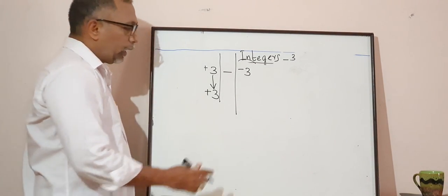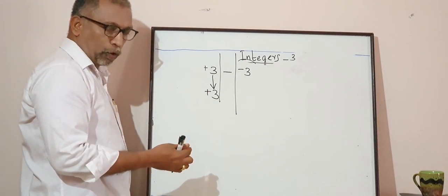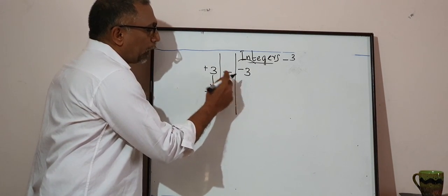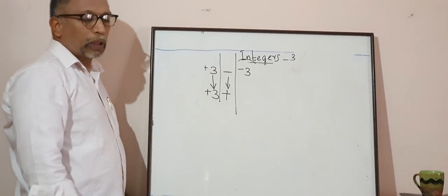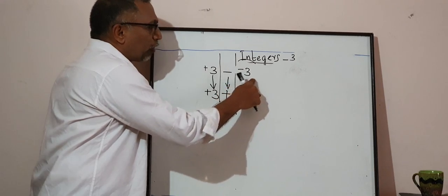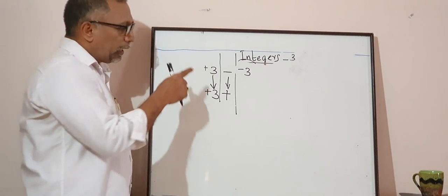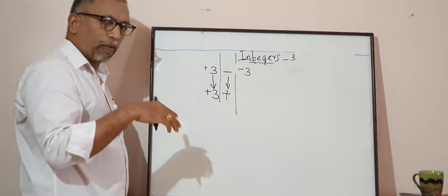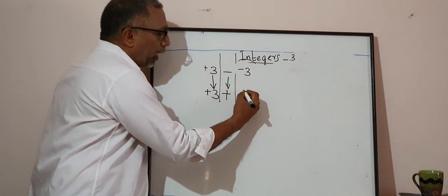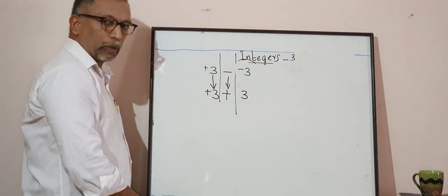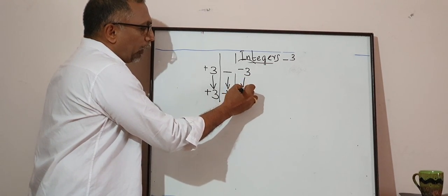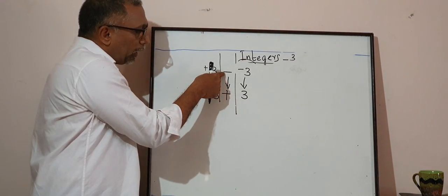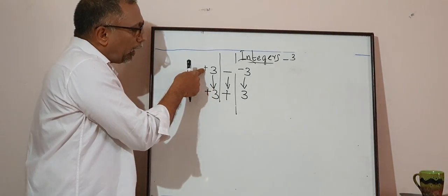The second step: this minus sign is the sign for subtraction. Since we want only addition, change it to plus. The third step: this is negative three — negative is the sign of this three. Find the additive inverse of negative three, which means flip the sign. Negative three becomes positive three. So you write the plus sign here and the additive inverse of the last number.